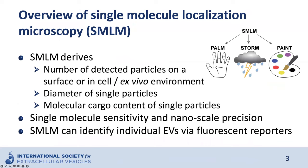SMLM comprises several techniques. Some of the most well-known include PALM, or photo-activated localization microscopy; STORM, or stochastic optical reconstruction microscopy; and PAINT, or point accumulation for imaging in nanoscale topography. Because SMLM has single-molecule sensitivity and nanoscale precision, it provides information about important characteristics of particles. For example, SMLM can determine the number of detected particles, either on a surface or in a cell or ex vivo environment.